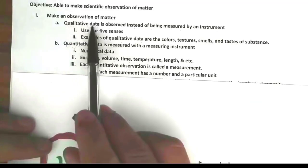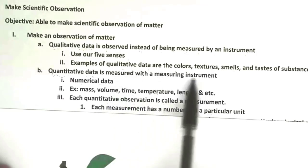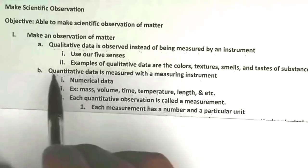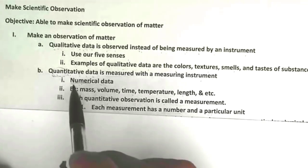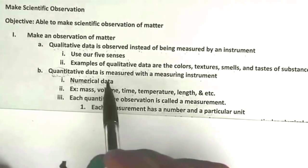Unlike qualitative data, quantitative data is measured with a measuring instrument. When we look at the word quantitative, think of the word quantity. When we think of the word quantity, we think of number. So quantitative data is basically numerical data.